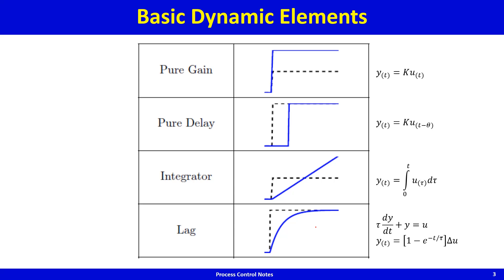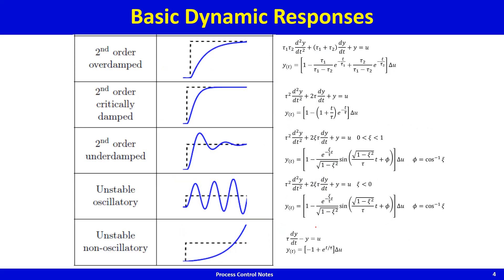We also have second order. The second-order over-damped case comes from a second-order differential equation, with solution involving tau 1 not equal to tau 2. Its solution is a combination of exponentials. A first-order response would have been much faster, with time constant equal to the square root of tau 1 times tau 2.